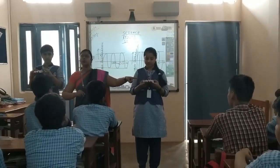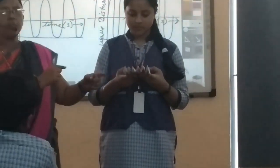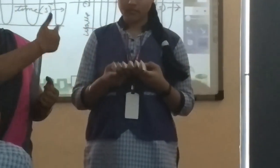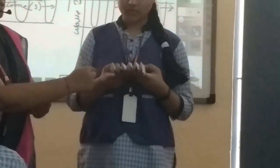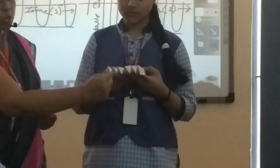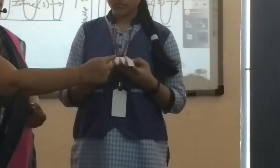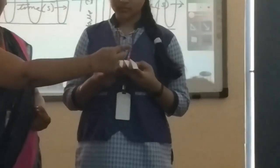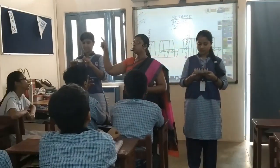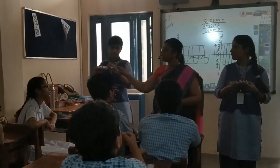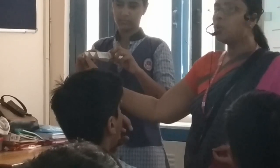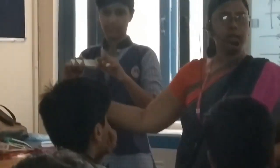Let's have a look at the first wave and count the number of waves in it: 1, 2, 3, 4, 5, and 6. Now let's see the second wave: 1, 2, and 3.